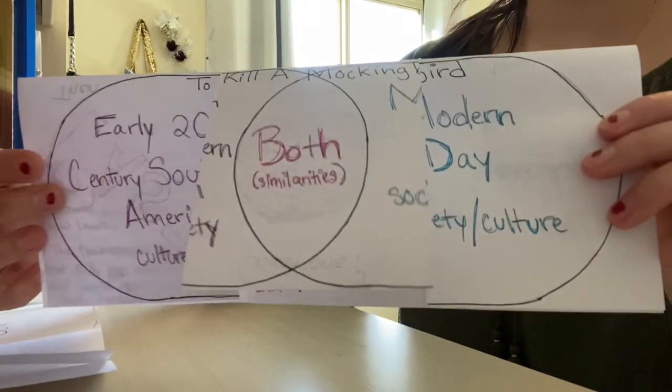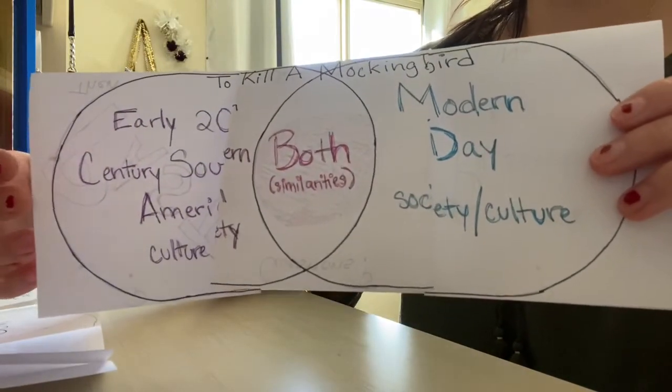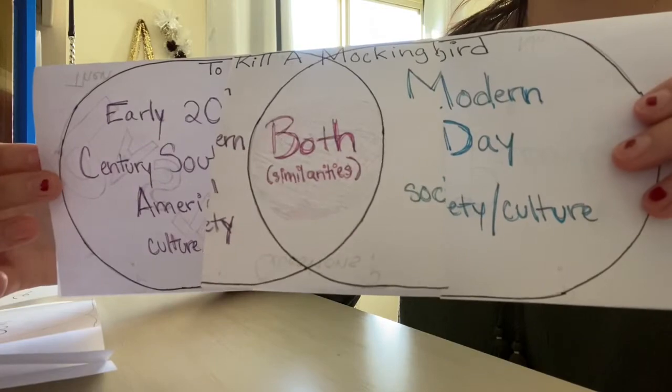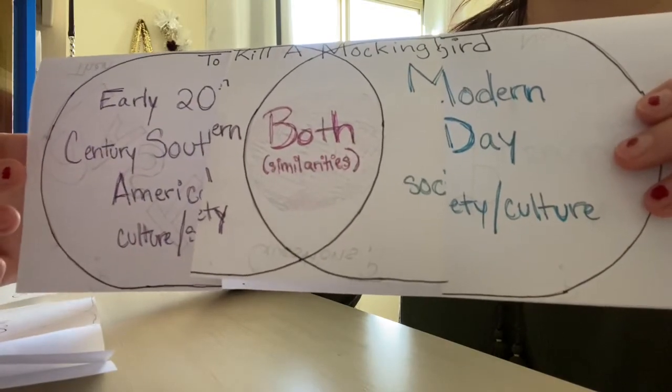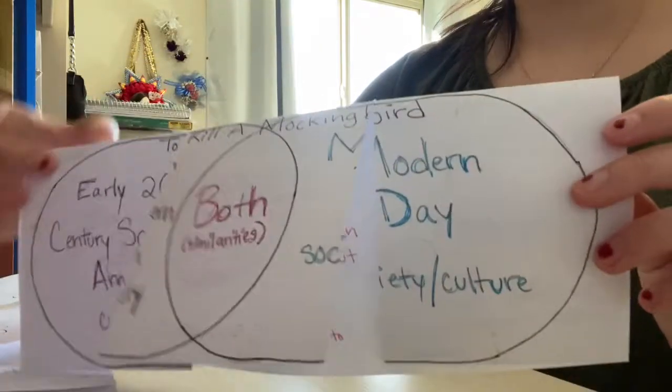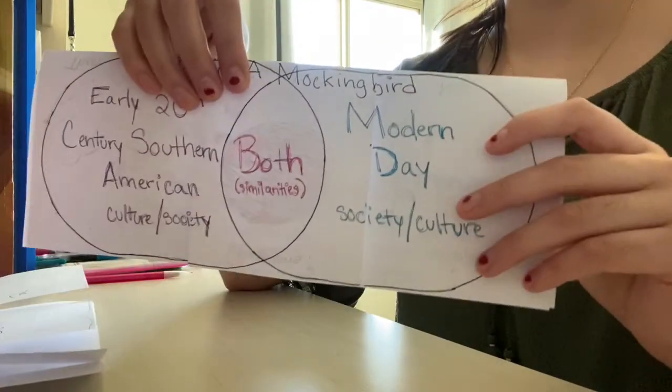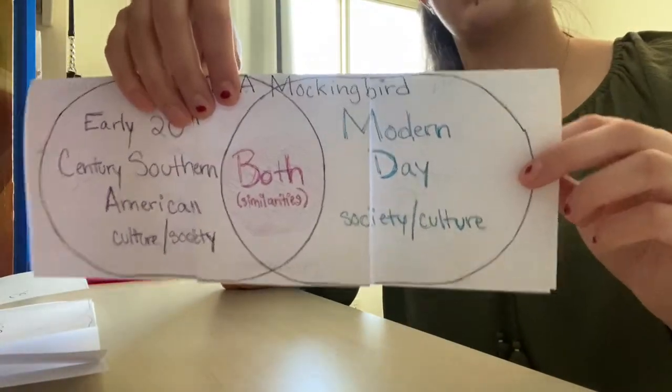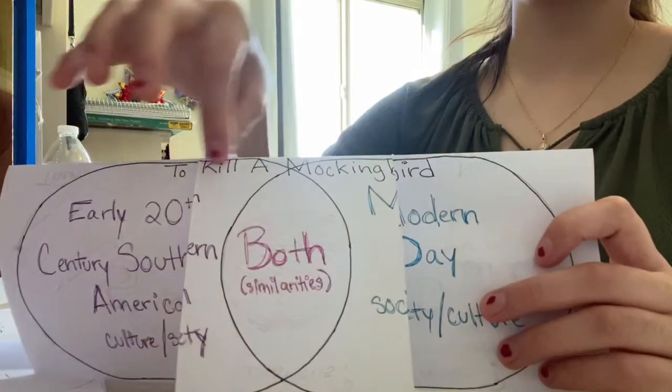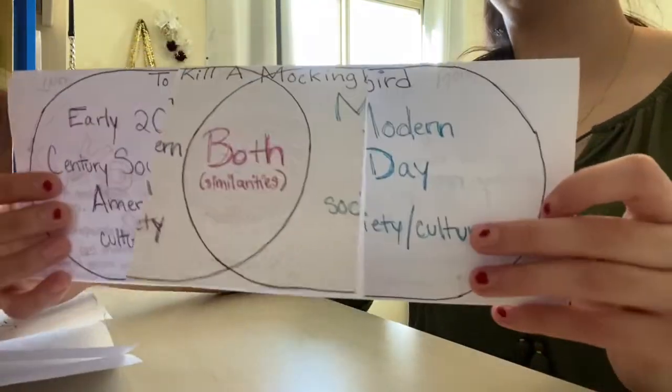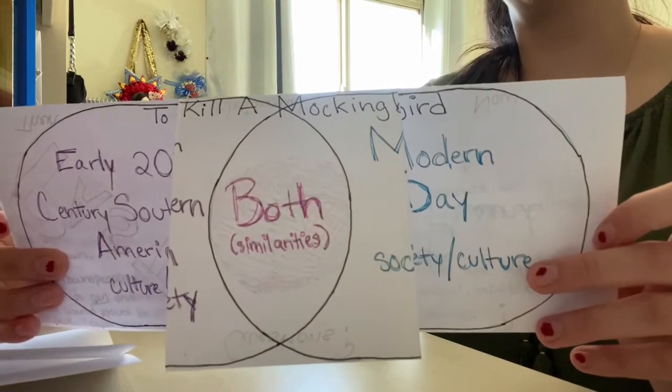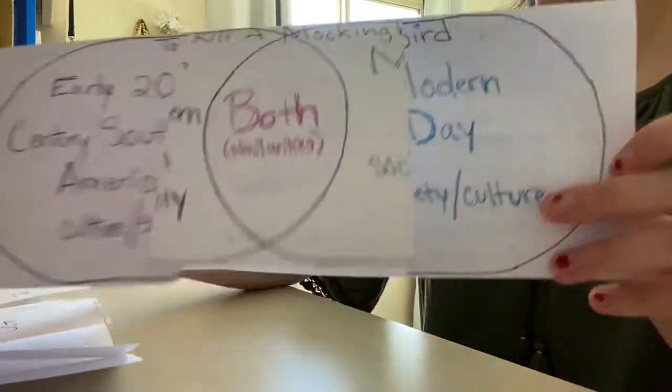So on this side, we have the early 20th century Southern American society. In the middle we have both, and on the other side is modern day culture and society. And on the top I just put To Kill a Mockingbird, just to make it clear that this is what my students will be using when they are reading the novel.